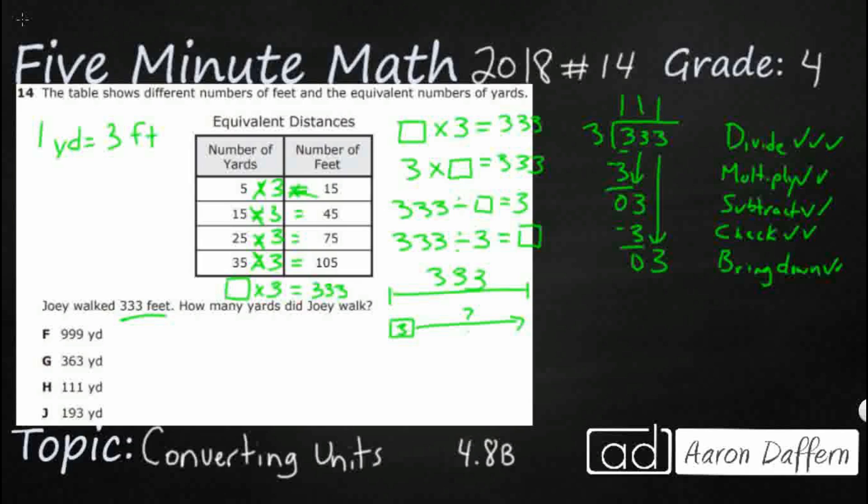3 goes into 3. One time. Multiply. 1 times 3 is 3. Subtract. 3 minus 3 is 0. Check. That is good. There's nothing left to bring down. So my answer is going to be this 111.